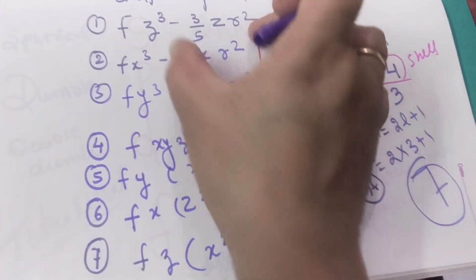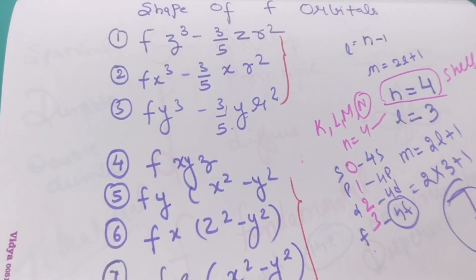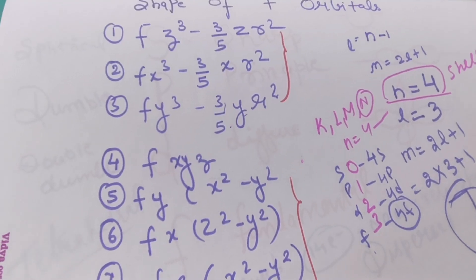You can see these three orbitals are having the common name. These three orbitals are having nearly the same common name. One x is main and then three by five of z r square, similarly. So you can learn and now we will see the shapes of f orbitals.